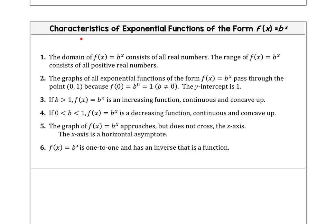Let's look at the characteristics of exponential functions in the form y equals b to the x power. We know the domain consists of all real numbers and the range consists of all positive real numbers. The graph of the exponential function passes through the point (0, 1) because substituting 0 in for x gives us b to the 0, which is 1. So the y-intercept is 1.